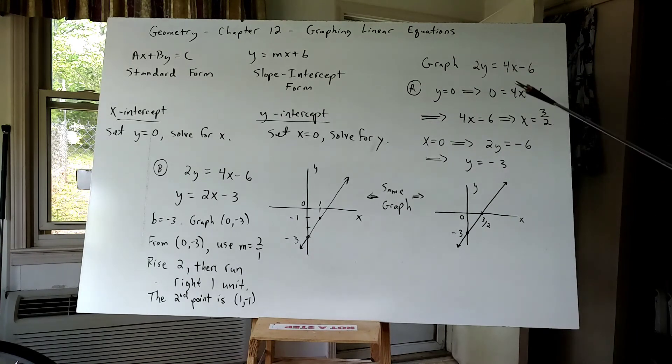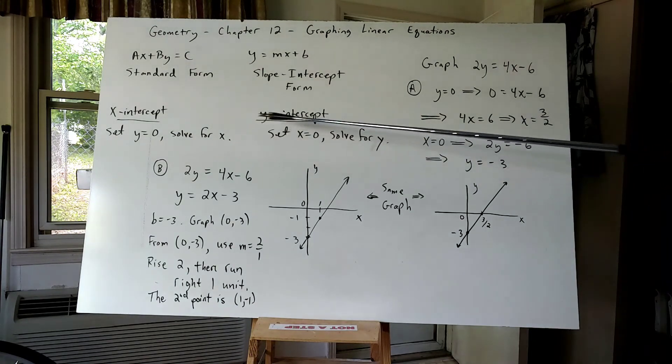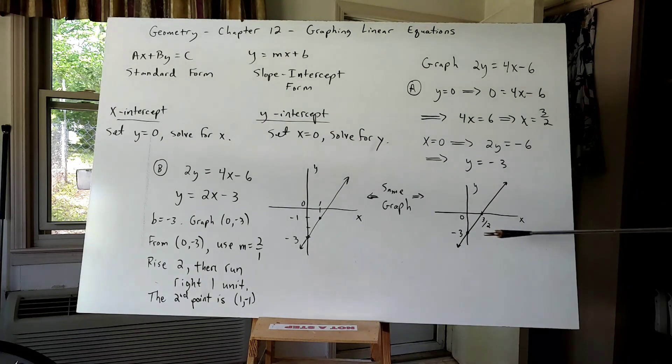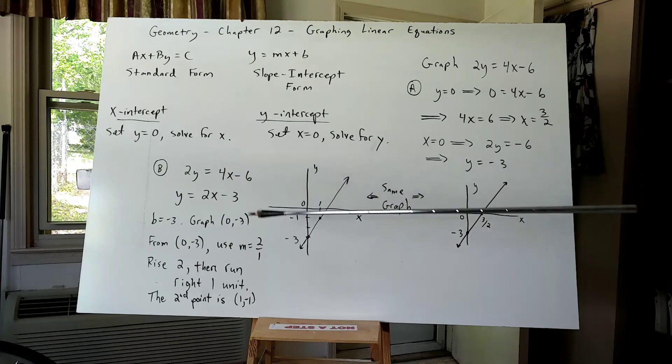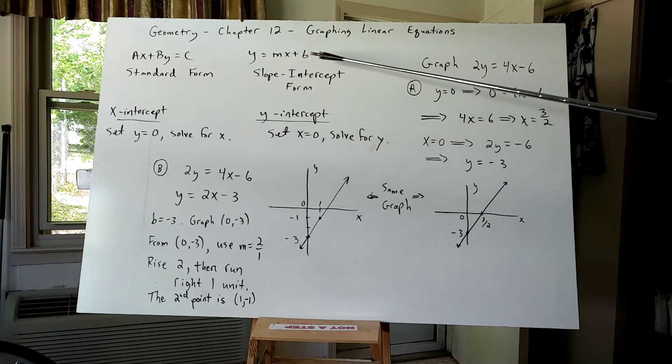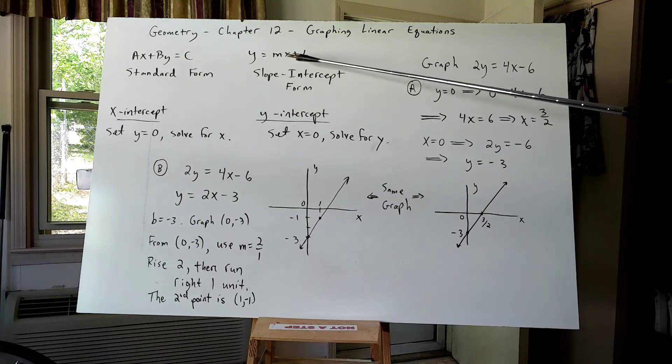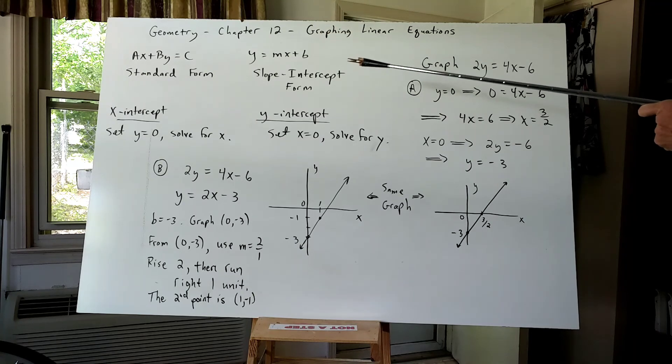The first way by using intercepts. X intercept, set Y equal to zero, solve for X, plot that on the X axis. Y intercept, set X equal to zero, solve for Y, plot that on the Y axis. With those two points, you draw your line through them. The second way I showed you how to graph these linear equations is using slope intercept form, which meant I had to move it into this form, Y equals MX plus B, where B is the number on the Y axis that the line will pass through. And then I use slope and rise and run from this point to get to a second point that I wish to plot in order to graph the line.